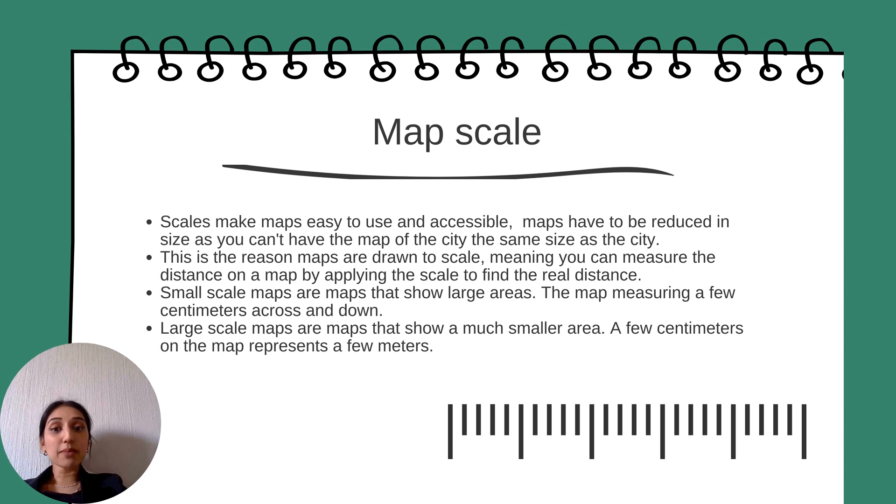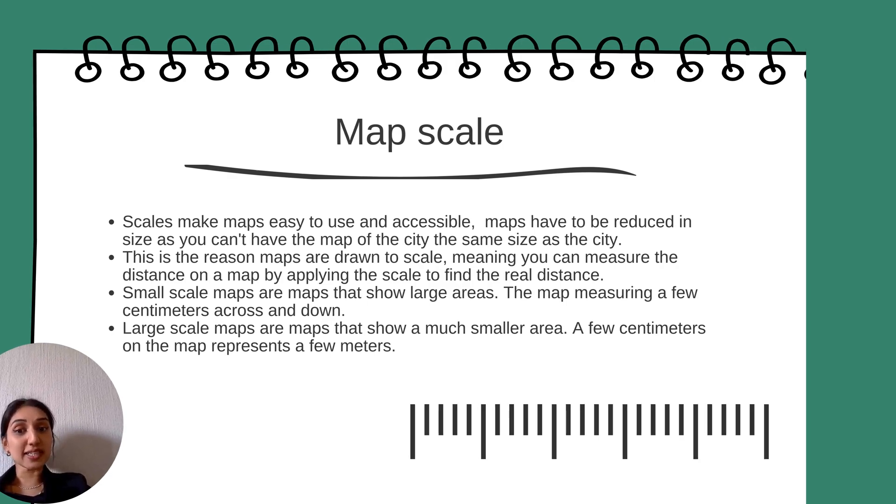This is the reason maps are drawn to scale, meaning you can measure the distance on a map by applying the scale to find the real distance. Small scale maps show large areas measuring a few centimeters across. Large scale maps show a much smaller area - a few centimeters on the map represents a few meters.